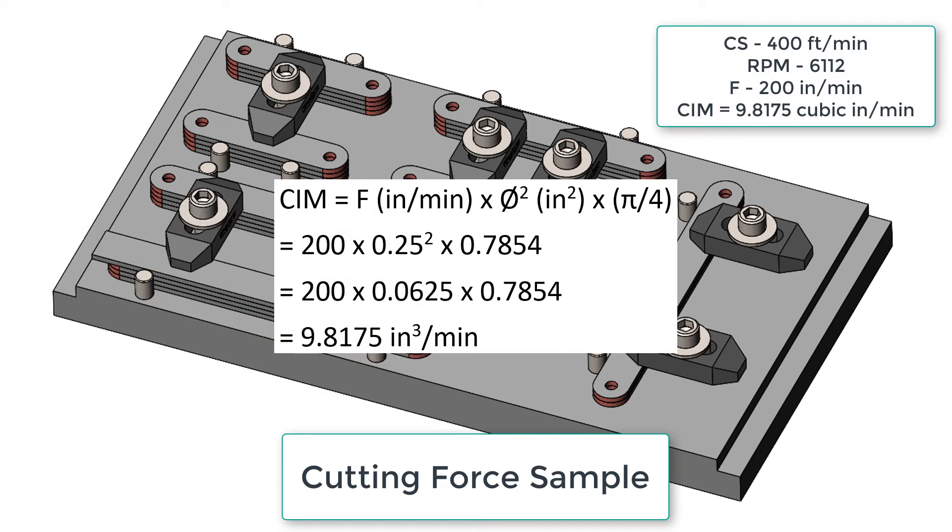To calculate our cubic inches per minute material removal we'll multiply the 200 inches per minute feed rate times the diameter of the drill, a quarter inch squared, times pi divided by 4 to get 9.8175.